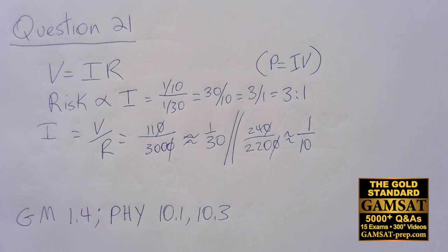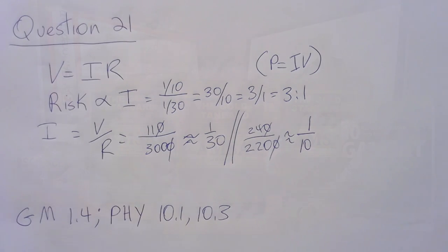That is what a fraction does. If you need to review your rules of fractions, you can see that in GAMSAT Math 1.4, and electricity—V equals IR, P equals IV—in Physics 10.1 and 10.3.